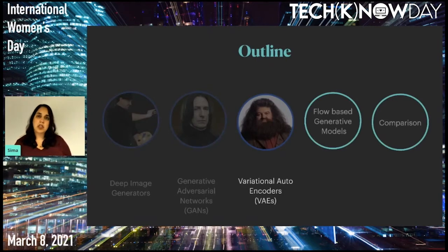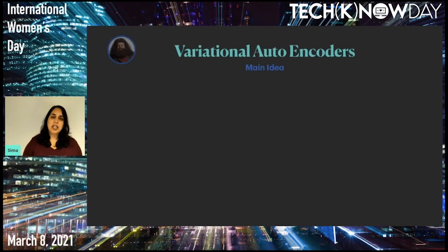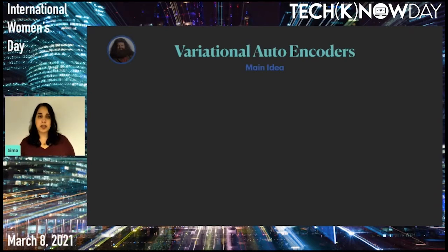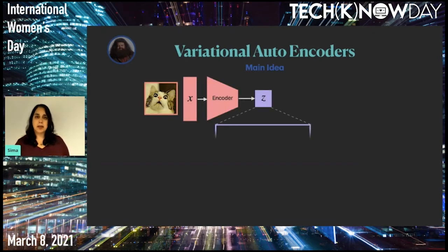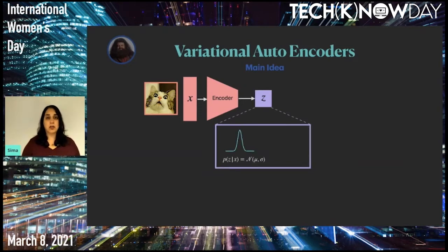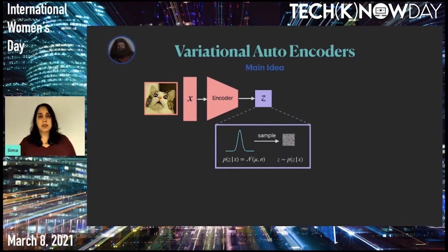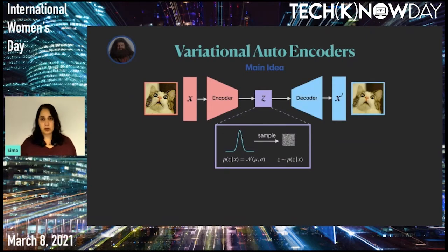The next family we're going to talk about are variational autoencoders with a cool teacher. Variational autoencoders also have two components, only this time they work together. We start with an image X and encode it into a latent space using our encoder. The latent space is the probability to generate a variable Z given the input X, usually modeled as a Gaussian, from which we can sample a specific Z and use the decoder to decode it to another image X-tag, which hopefully looks like the one we started with.